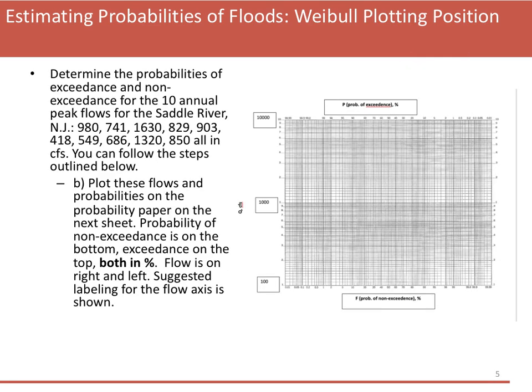That's great for those specific flows, but we want to be able to find the probability for any flow. We're going to do that by using probability paper and plotting the flows on it. The probability of non-exceedance is on the bottom, the probability of exceedance is on the top, and flow is on both the right and the left. This is special probability paper for making these types of plots.